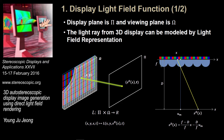Before I discuss the algorithm, I want to introduce light field representation. Light field representation represents a light ray with four parameters. There are two parallel planes: one is omega and the other is pi. Points passing through the omega plane can be described as an (x, y) point, and the point passing through the pi plane is (s, t).